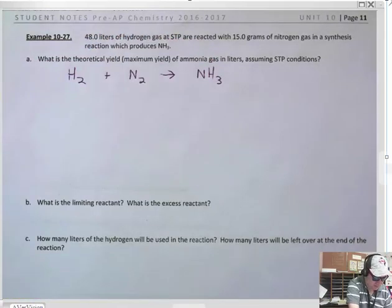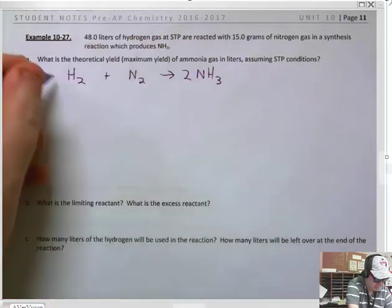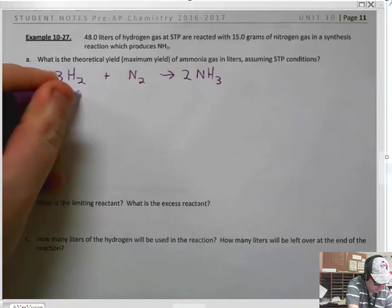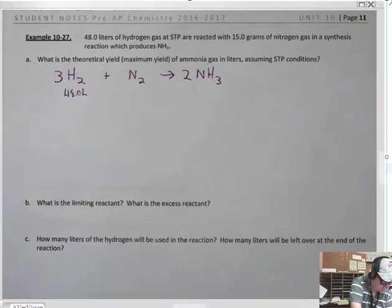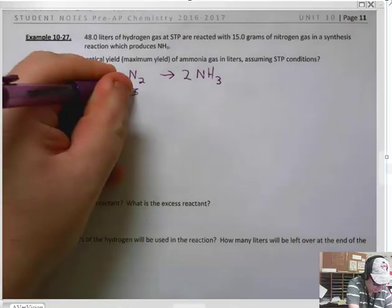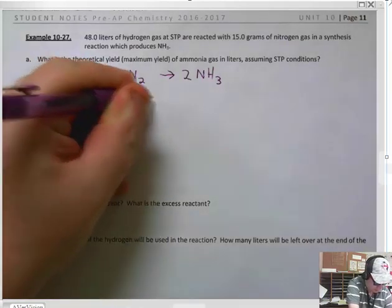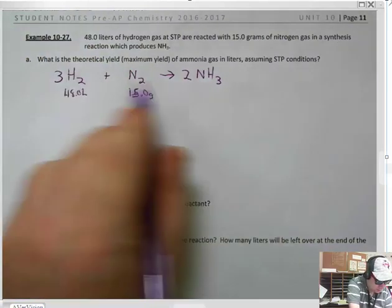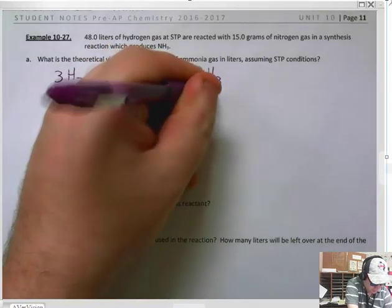Then you have to balance the reaction here. You're going to put a 2 here and a 3 here. Now we are starting off with 48 liters of hydrogen gas, and we are starting off with 15 grams of nitrogen. And we are trying to find the liters of NH3.